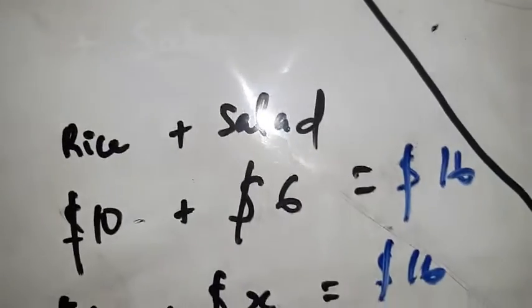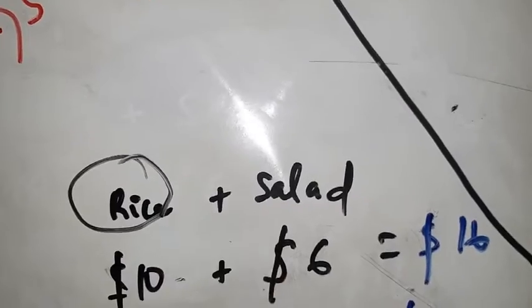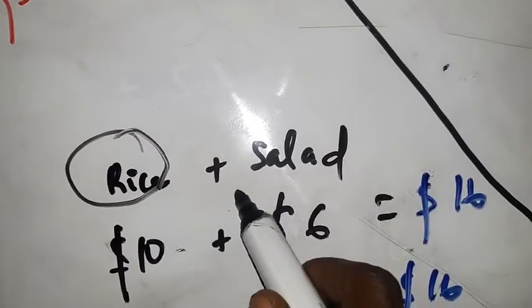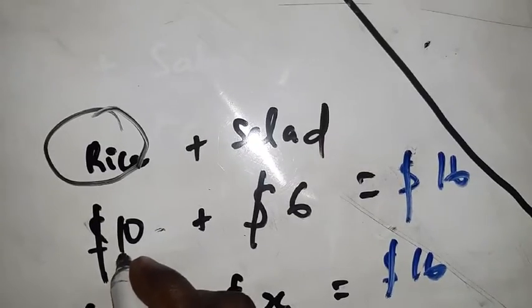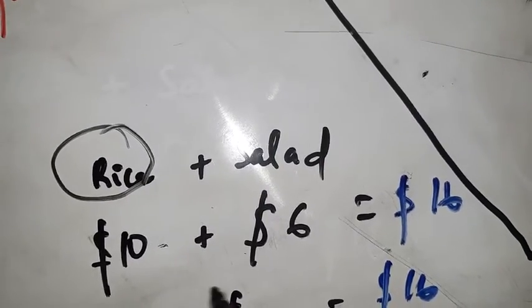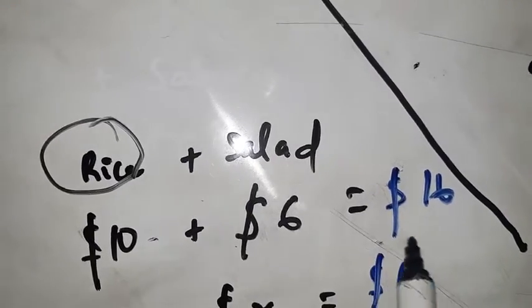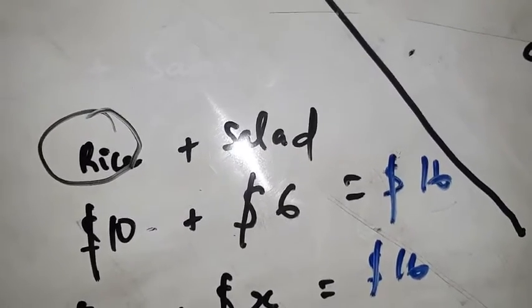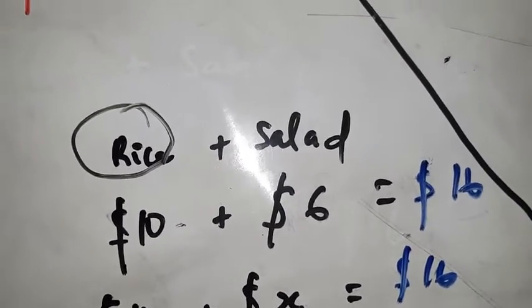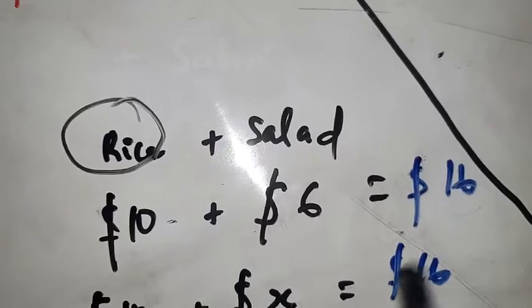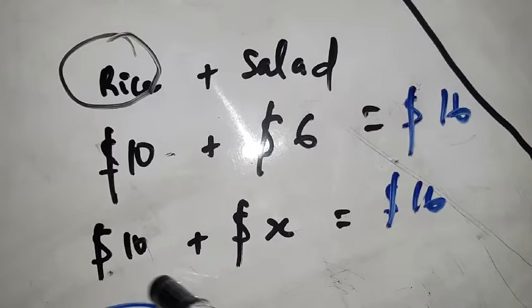Say you're at a restaurant and you ordered rice together with some salad. The cost of the rice is $10 plus $6 for the salad, so this will give you $16 in all. Now let's say you are having $10 plus something, assuming the waiter forgot what you bought in addition.